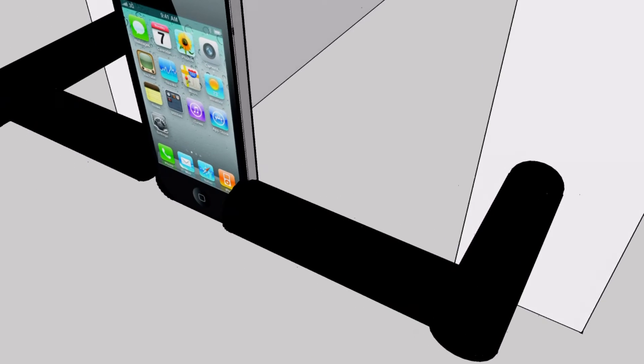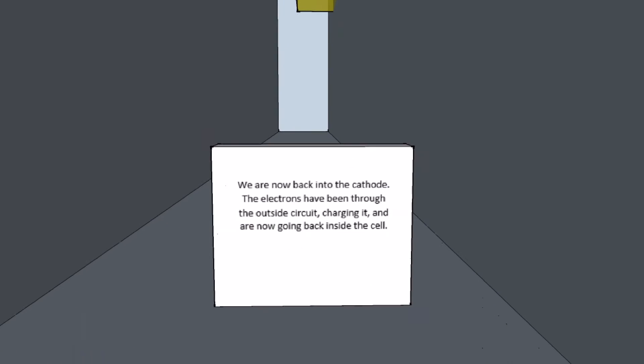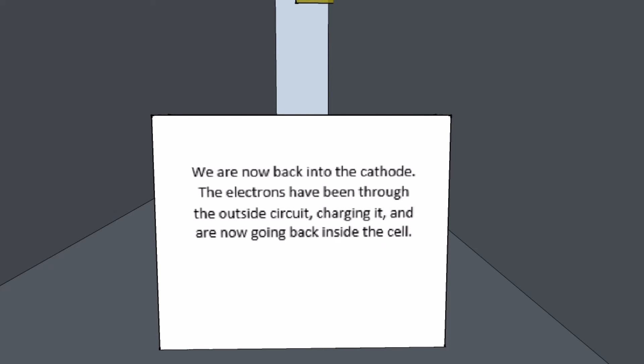They can run through a telephone or any other battery contributing to charging it up. We are now back into the cathode. The electrons have completed their journey and have contributed to charging the phone.